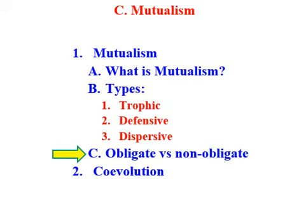We looked at different types of symbiotic relationships — parasitism, commensalism, and now mutualism — these very interesting interactions where both parties benefit. As you might imagine, if you have a mutualistic relationship going on for thousands or millions of years, then a lot of these relationships might get to the point where one organism can't survive without the other. They're that intertwined. There are other types of symbiotic relationships that aren't so intimately tied together — obligate symbiotic relationships versus non-obligate.